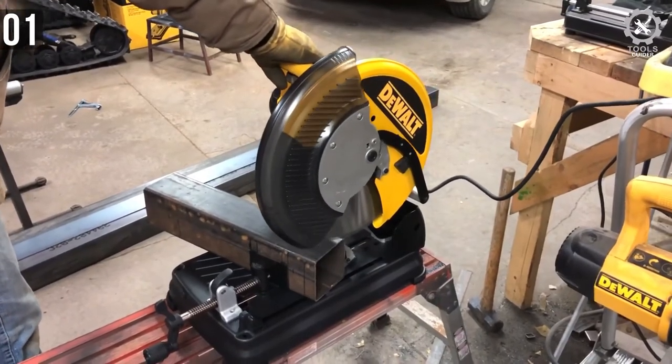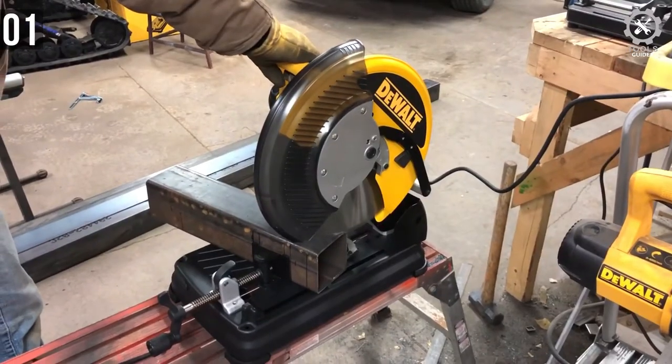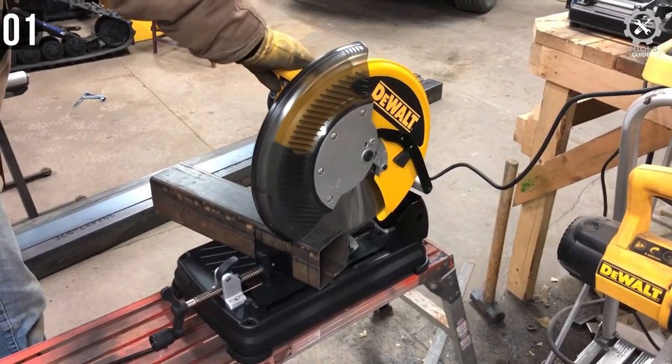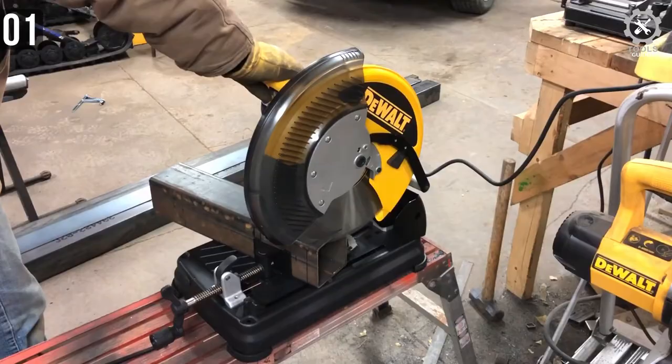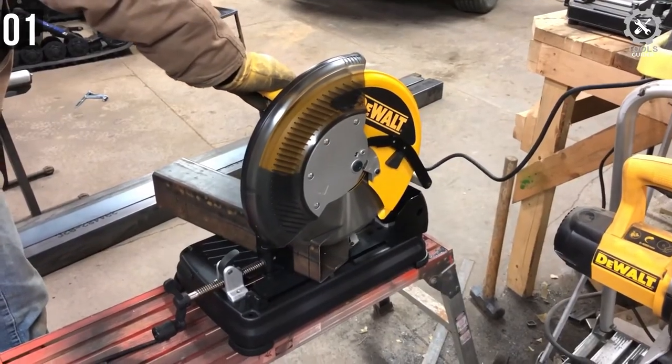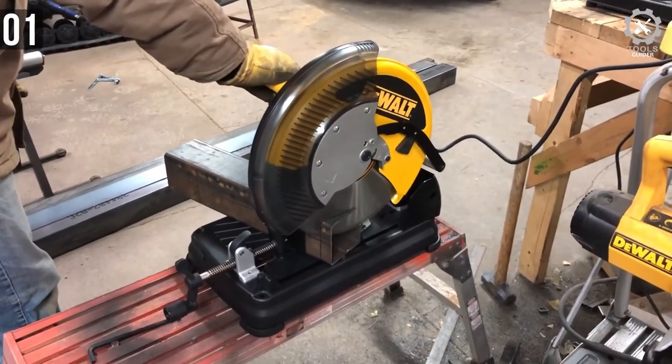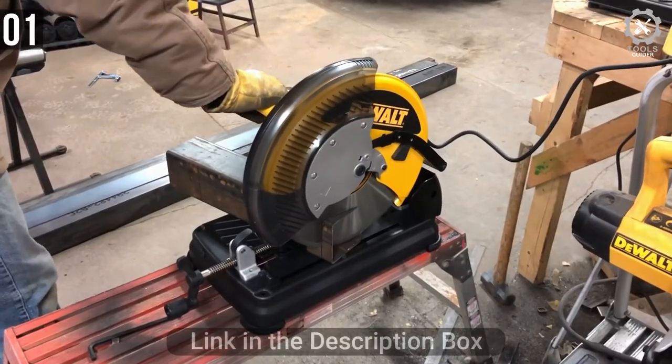This equipment comes in yellow and black color and is corded electric. The weight of this tool is 55 pounds and it comes with a dimension of 24 x 15.2 x 18.5 inches. It can cut both ferrous and non-ferrous metals.